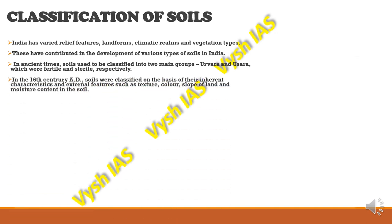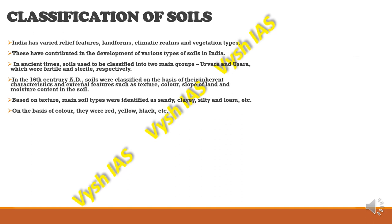In the 16th century AD, soil was classified on the basis of characteristics and external features such as texture, colour, slope of land, and moisture content. Based on texture, soil types were identified as sandy, clay, silty, and loamy. Based on colour, they were categorized as red soil, yellow soil, and black soil.